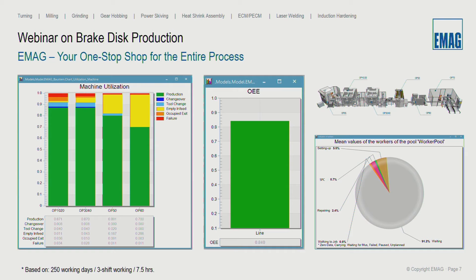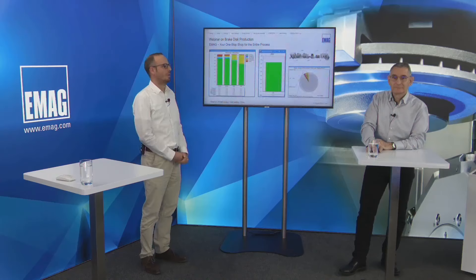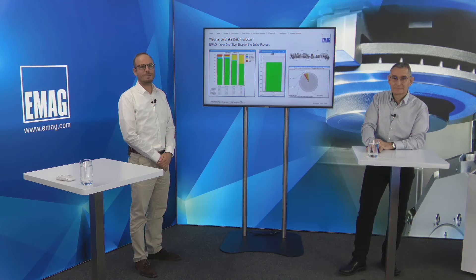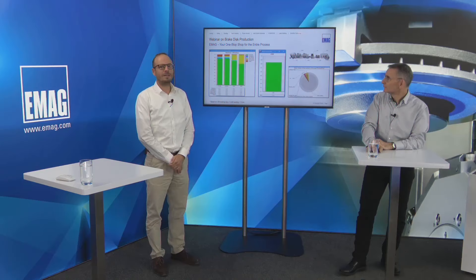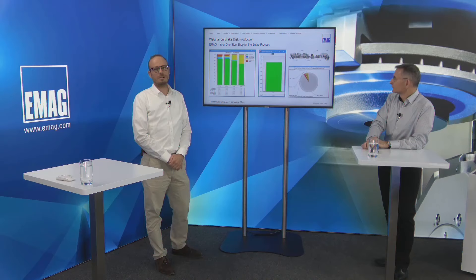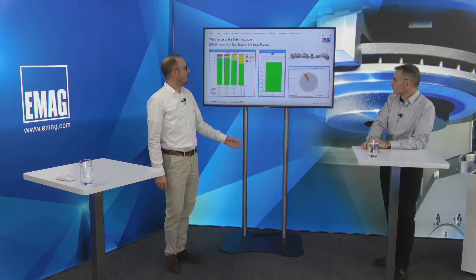On the next slide you can see the machining operations — op10, 20, 30, 40, 50, and 60. The green areas show production running and the yellow indicates empty infeed. All machines are pulling at the end of the line — no stops, no bottlenecks. This is what we can demonstrate during the quotation phase to give the customer confidence that the system will work. With the input we provide to the simulation, we achieve an OEE of 84 percent.